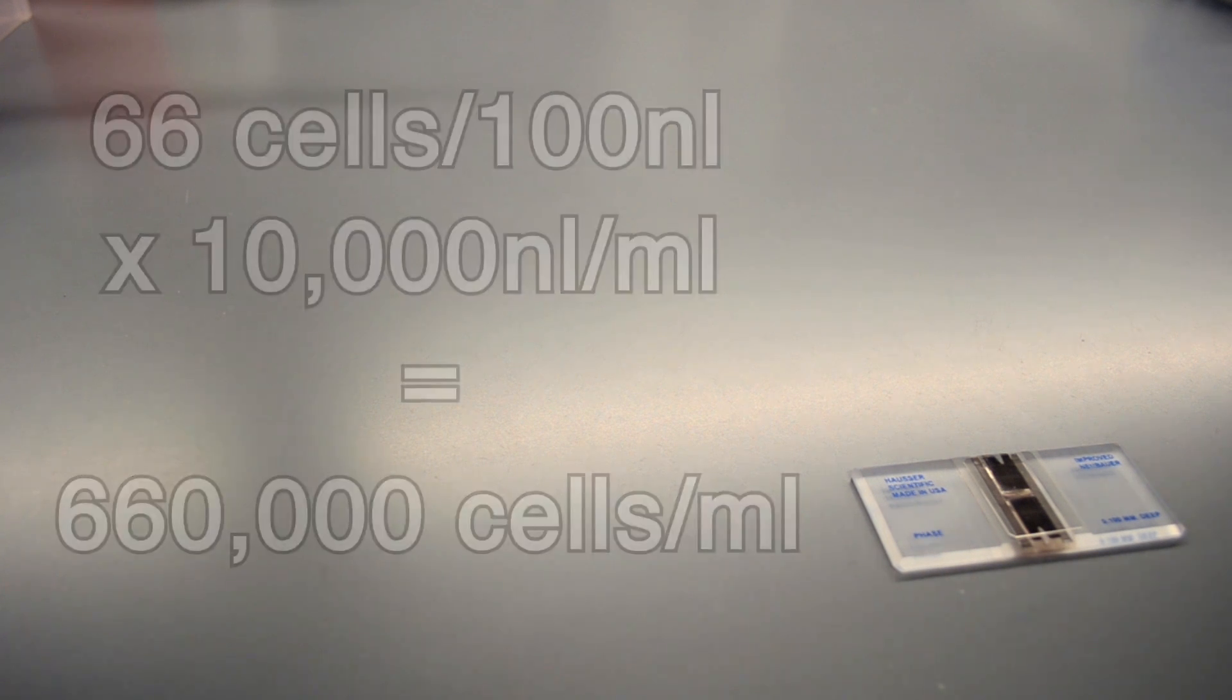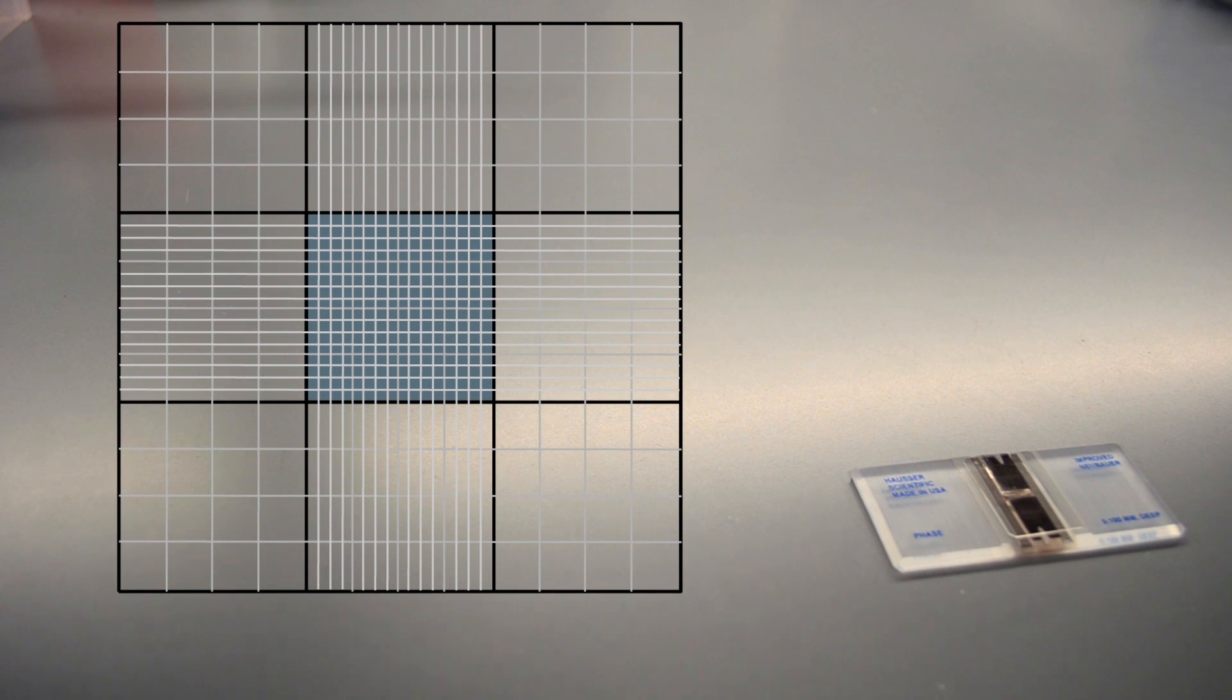If the mixture is very dense, you can use some of the smaller subdivided squares to help count and keep track of your cells.